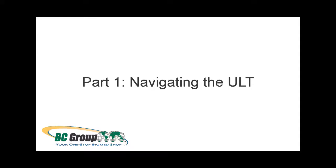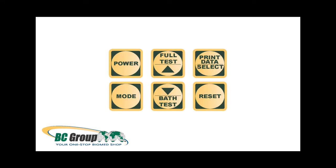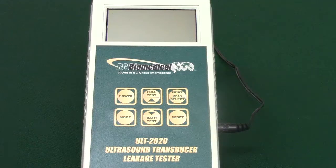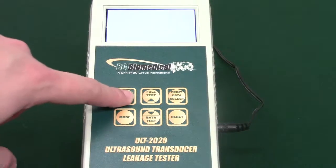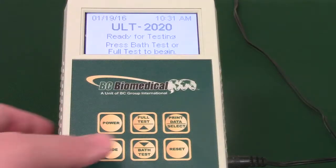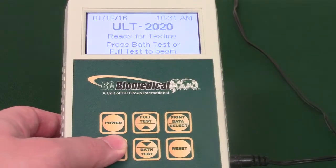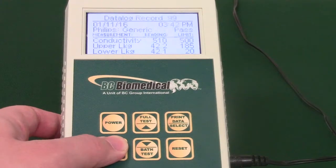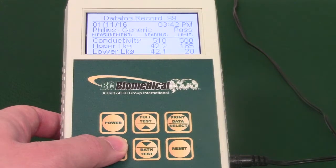Part 1: Navigating the ULT. When navigating the ULT, there are six main keys. The first is the power key, used for turning on your ULT. Next is the mode key. Use this to access the device configuration screen.